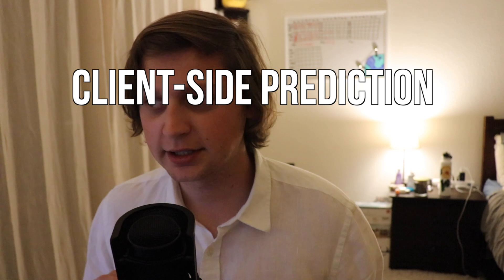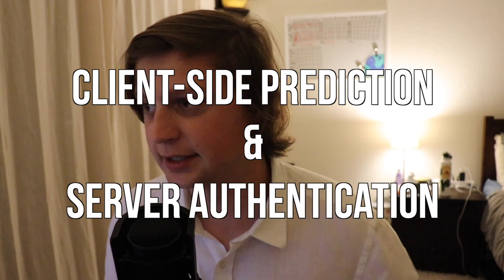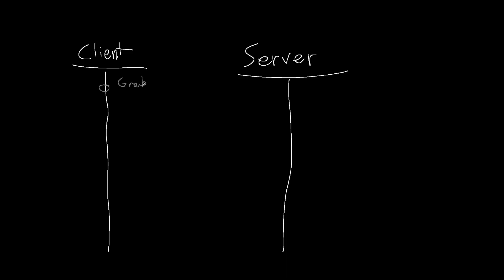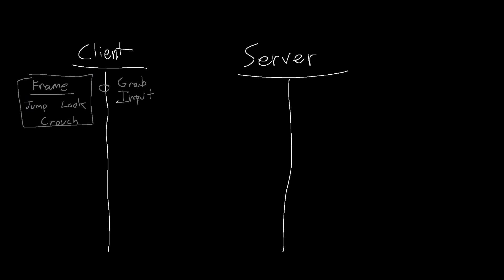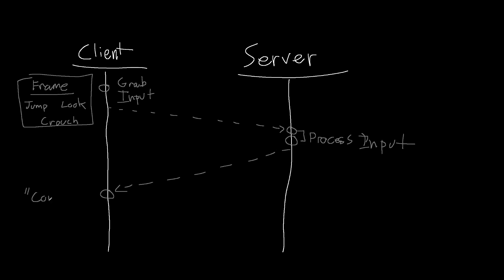Client-side prediction and its counterpart server authentication is a system in which we run parallel simulations of the game. The clients capture what their players are doing as input frames — a structure containing what buttons the players are pressing at a given time. The client uses these input frames to update the local simulation, then the input frames are sent to the server, which runs its own simulation. The server captures the player's state and sends it back to the client.